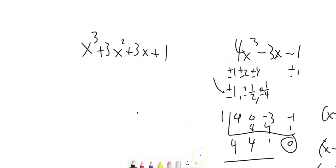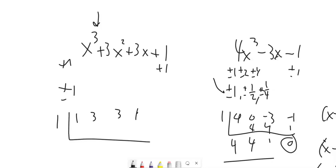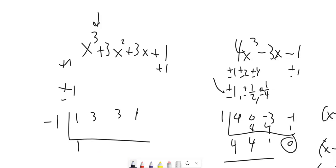Let's do this next polynomial. Factors of 1 are plus or minus 1, so my only possible rational zeros are plus or minus 1. I should have three zeros according to the degree. Let's try positive 1 first — but looking at it, all the coefficients are positive so the result just keeps getting bigger. 1 won't work. Let's try negative 1. Bring it down, multiply, add, multiply, add — that looks good — multiply, add. Yes, that gives us a zero!